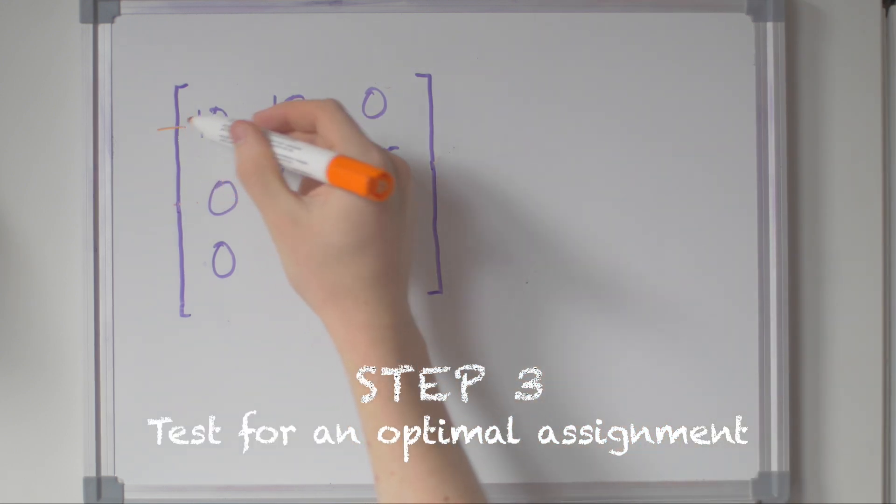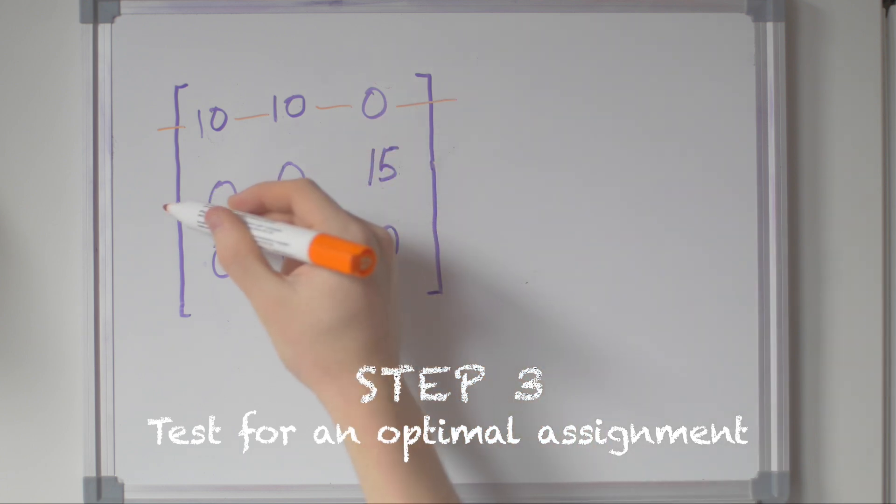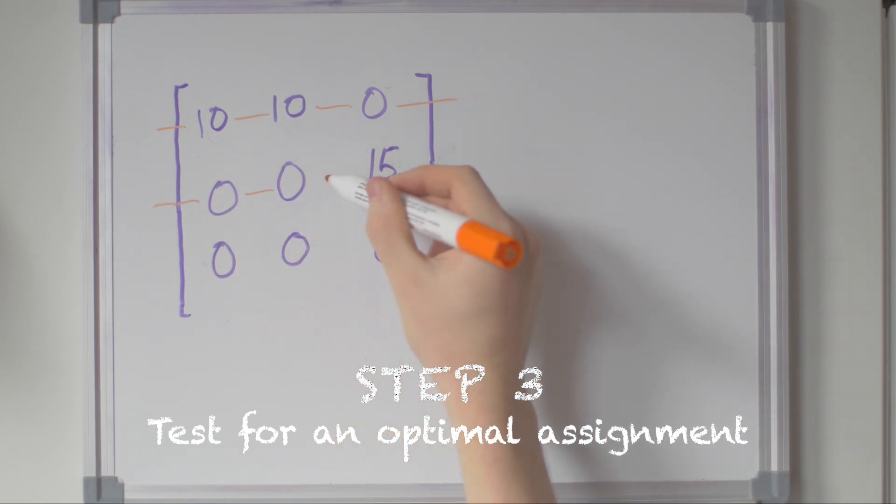Step three: test for an optimal assignment. Step three covers the zeros with three lines, so we jump to step five.